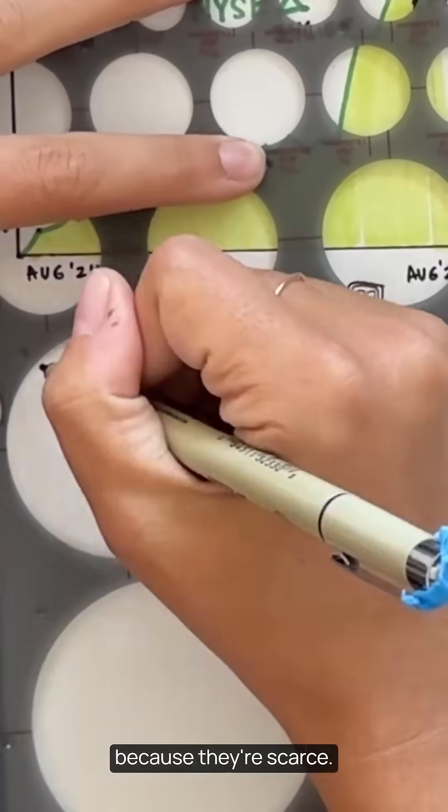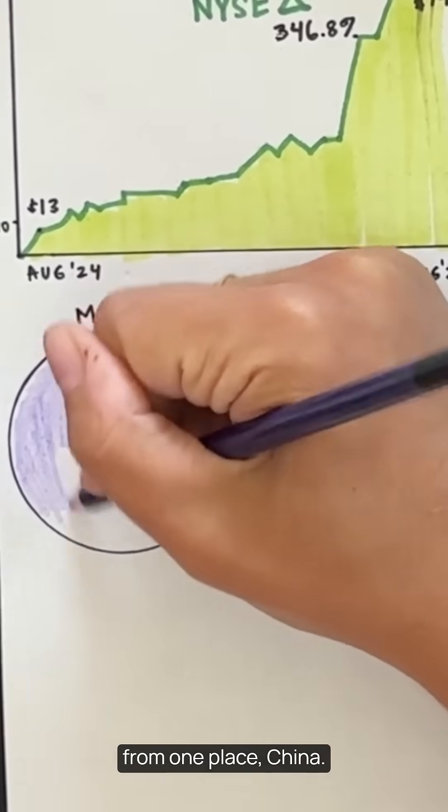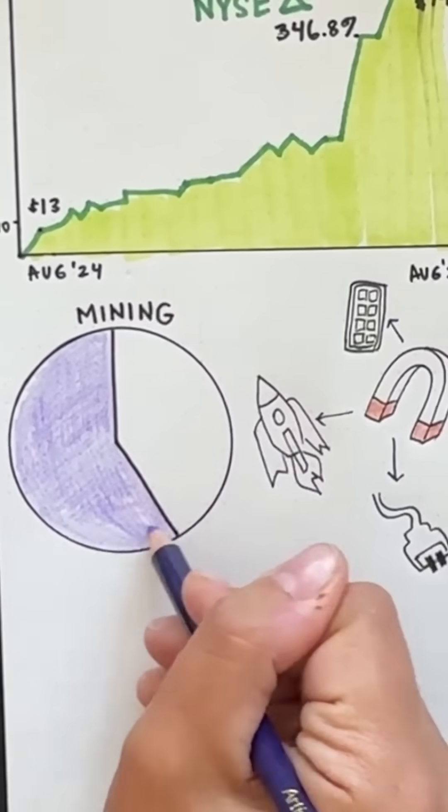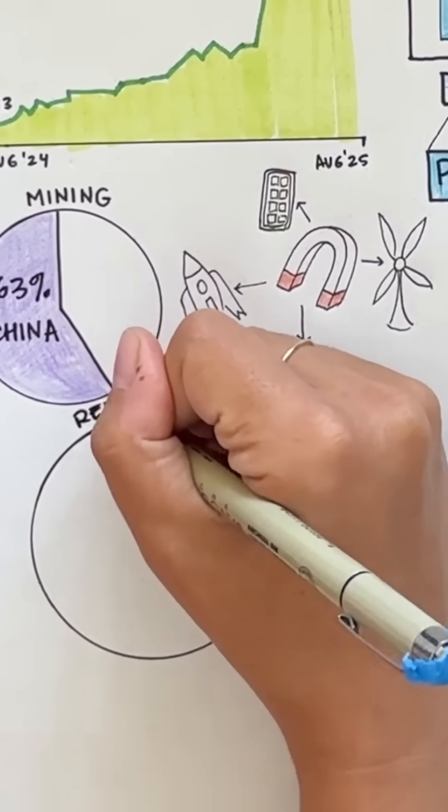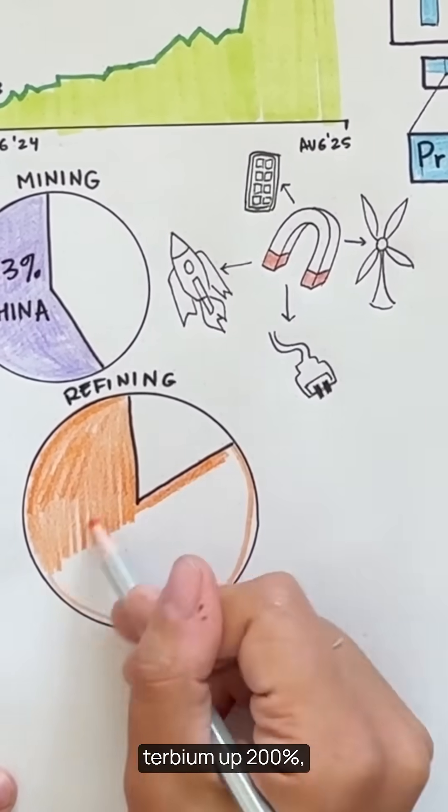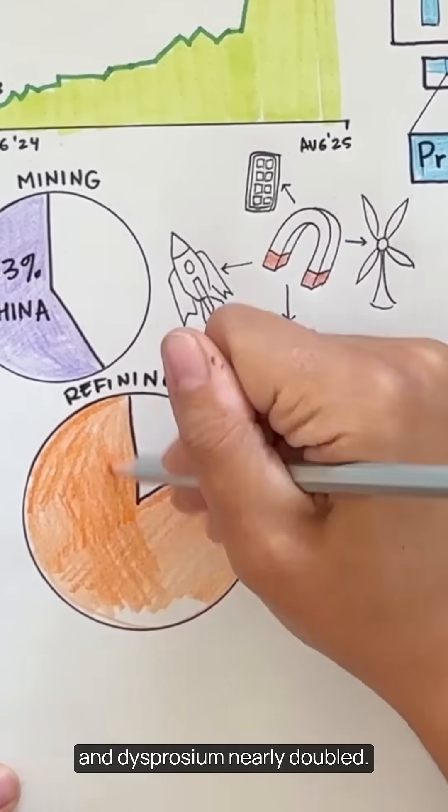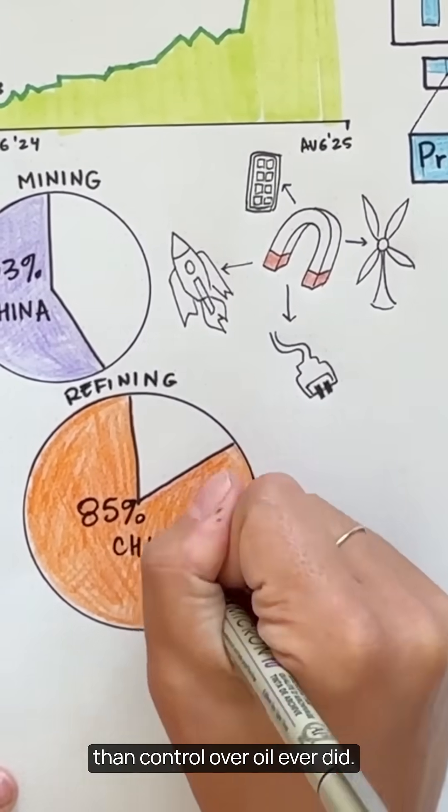Dysprosium helps those magnets survive extreme heat, so it shows up in EVs and military tech. All of these metals aren't rare because they're scarce. They're rare because they're hard to separate. And almost all of them come from one place: China. China controls 63% of global rare earth mining and over 85% of global refining. That's led to a price war. Since 2020, neodymium is up 300%, terbium up 200%, and dysprosium nearly doubled. These days, control over these obscure elements might matter more than control over oil ever did.